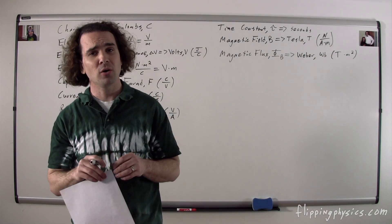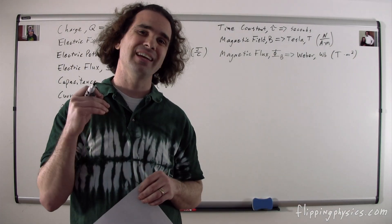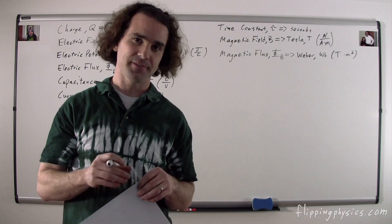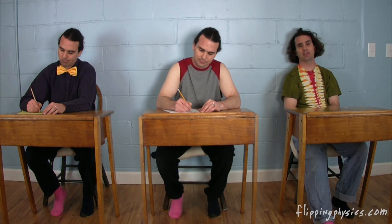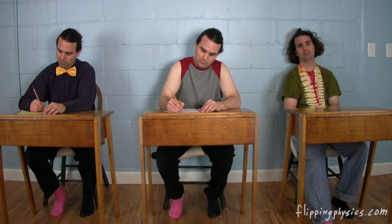Bo, what are the symbol and dimensions for inductance? The symbol for inductance is an uppercase L, not to be confused with angular momentum, and its dimensions are Henrys — a Henry is a volt second per amp.